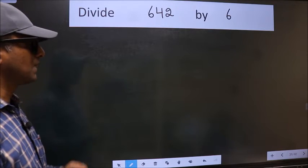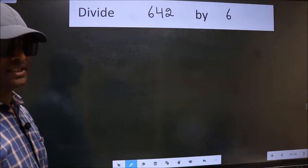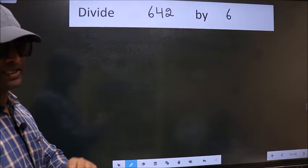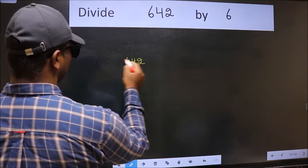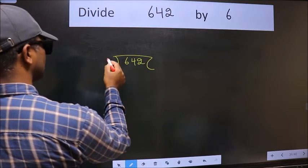Divide 642 by 6. To do this division, we should frame it in this way. 642 here and 6 here.